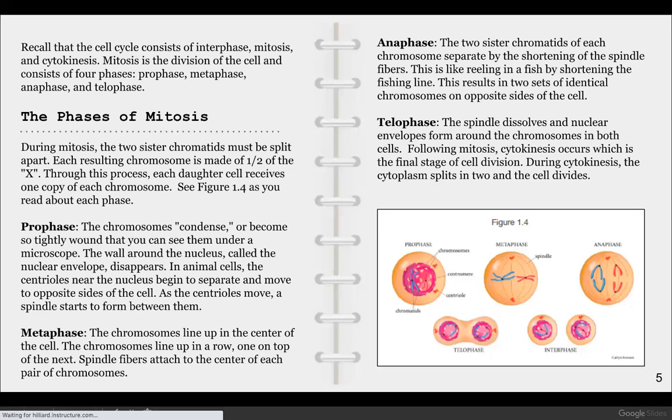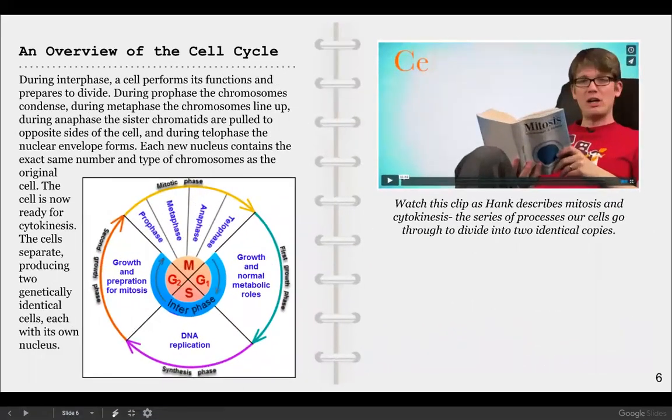The overview of the cell cycle once again: if you look at that picture starting on the right, you'll see the growth and normal metabolic roles - that's the G1 phase during interphase. In the S phase we have the DNA replication, and then at the end of interphase we start to prepare for mitosis and make some more organelles and proteins and all that kind of stuff. The mitotic phase then simply is the prophase, metaphase, anaphase, telophase, and then we divide the cell into two and you have it all done. You can take a look at this video if you'd like, and that's it.